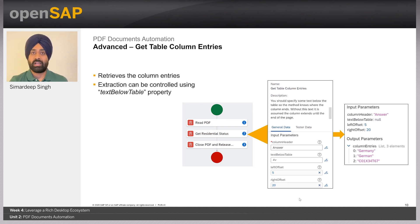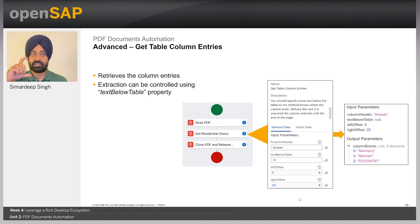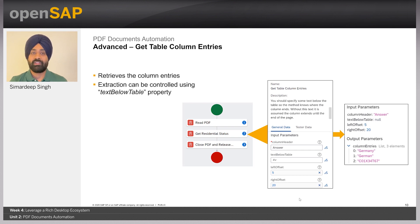This is where the problem of extracting table data is solved using the advanced activity called getTableColumn. This activity allows the extraction of table data using different configurable parameters. Column data serves as a starting point of the extraction — in our case, 'answer' — and the text below the table is the stopping point. The engine extracts everything between the starting and stopping points. The text-below-table parameter is optional and is only required when there is more text after the table. To make the extraction more precise, add left and right offsets.